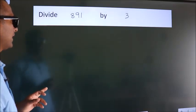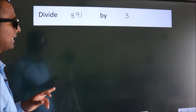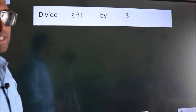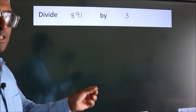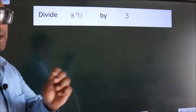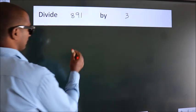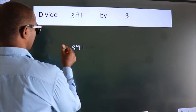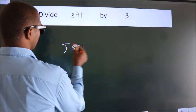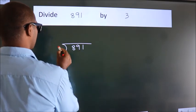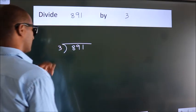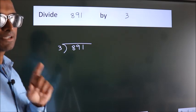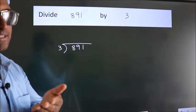Divide 891 by 3. To do this division, we should frame it in this way: 891 here, 3 here. This is your step 1.